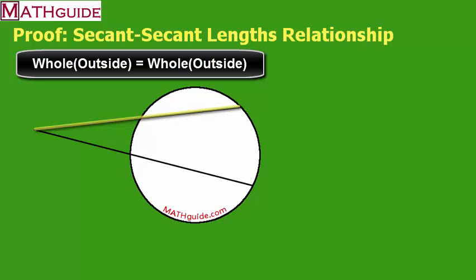Let me say that again. The whole distance of this secant line times the outside of that secant line is going to be equal to the whole distance of this secant line times the outside of that secant line.